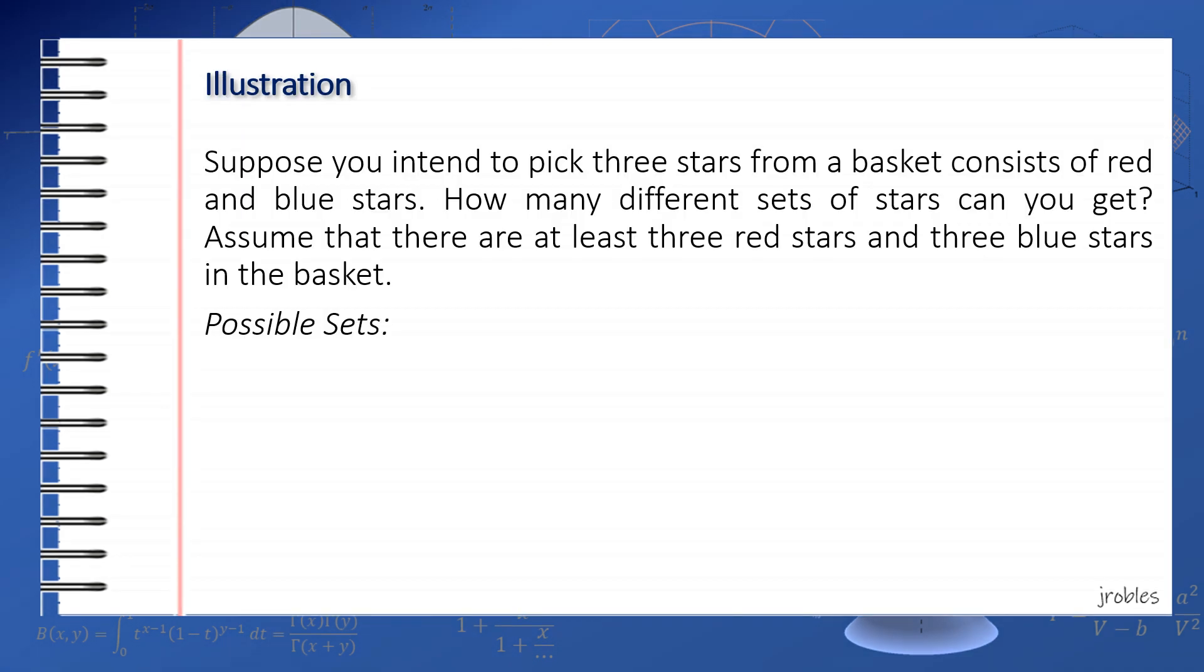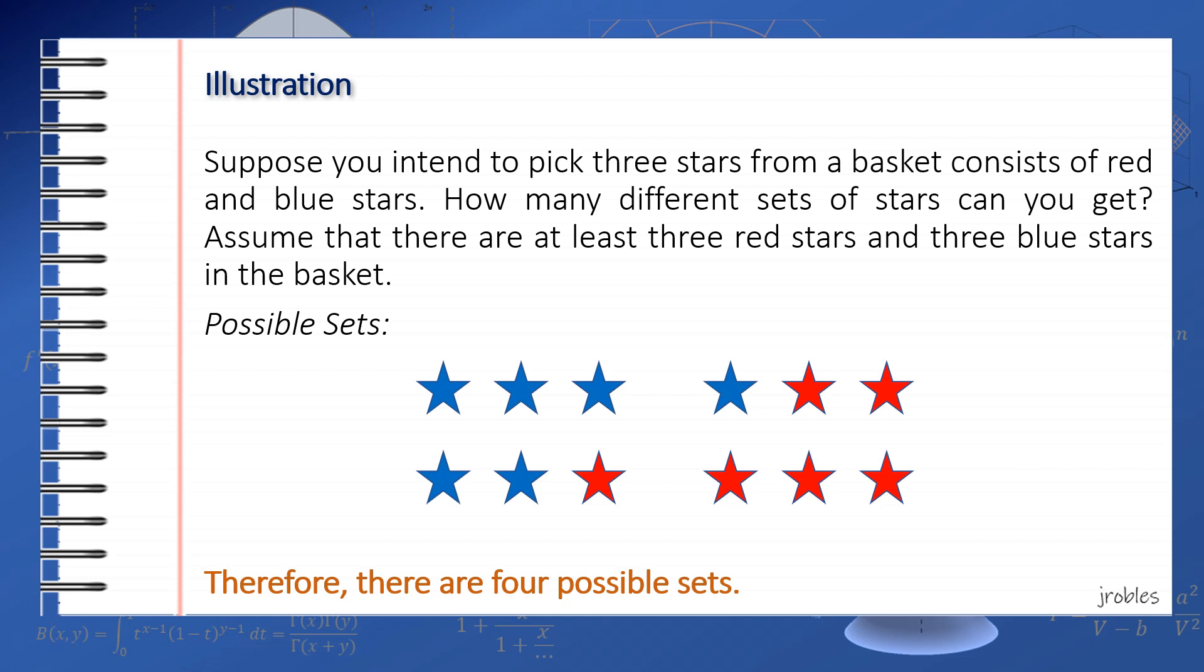If we want 3 stars consisting of either red or blue, we can have a set of 3 blue stars, 2 blue and 1 red, 1 blue and 2 red, or all 3 reds. Therefore, we have 4 possible sets.